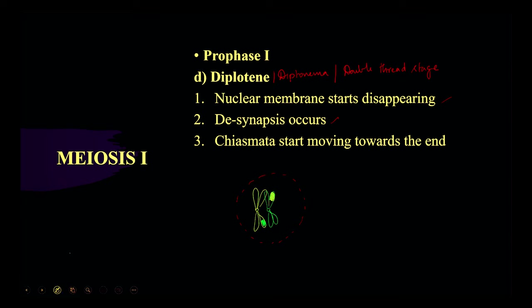After crossing over, there is a place in which the chromosomes still remain attached — that is called chiasmata. The place at which crossing over takes place in the homologous chromosome is called chiasmata. Here this chiasmata will start moving towards the end — if crossing over happened here, it moves towards the end. This is called terminalization.